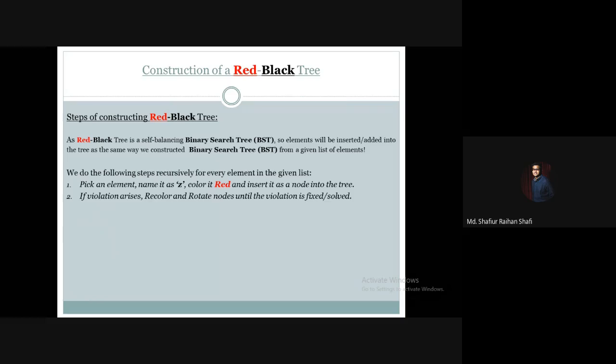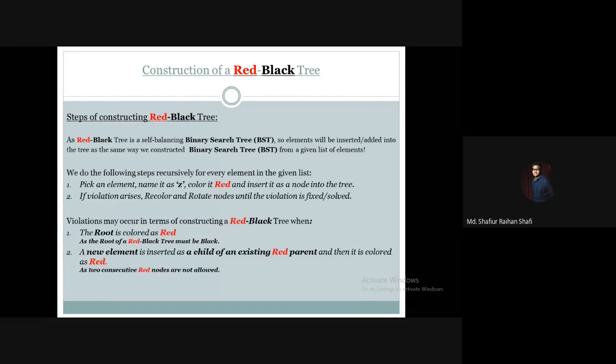A violation may occur in terms of constructing a red-black tree when the root is colored as red. The root of a red-black tree must be black. This happens when we insert the first element of the list.